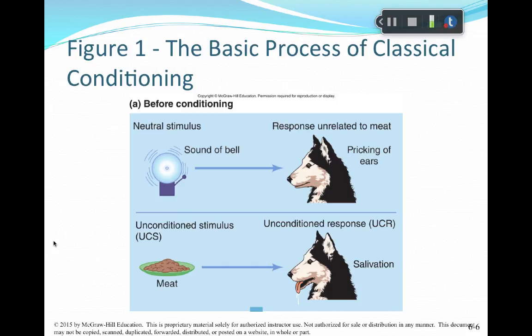So, before conditioning, in Pavlov's model, he found that a neutral stimulus such as the sound of a bell — the dog had a natural response to it. Their ears pricked up; they heard something. The unconditioned stimulus, which was the smell of meat or food, naturally gave a response — they salivated every time.